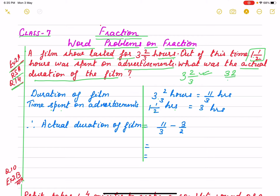Sometimes I see you writing the wrong way. You write three here, then two by three — that is three as a whole number and a fraction, it is a mixed fraction. So the statement is: film show lasted for three and two by three hours. What is the duration of the film including advertisements? We write: duration of film = three and two by three hours.